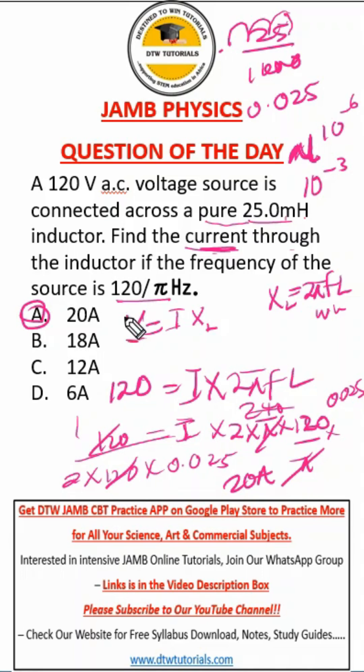That's why it's good to get the CBT app so you know how to navigate around it. The DTW CBT app has a calculator just the same as the JAMB CBT app, so you practice how to use it quickly. The JAMB CBT app has a square root feature. I think that's the only advanced thing. It has a square root feature, and the others are just your multiplication, division, and addition.